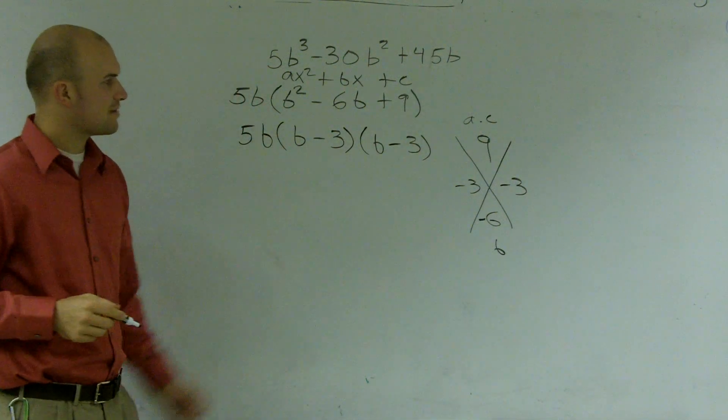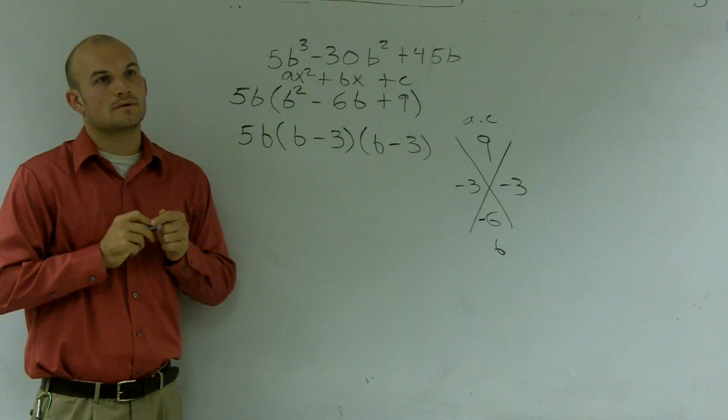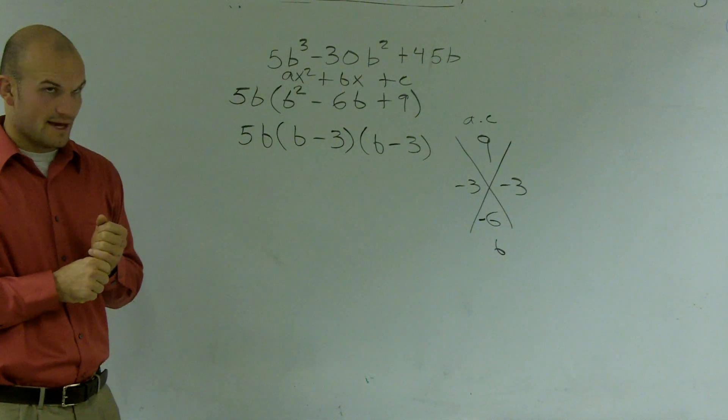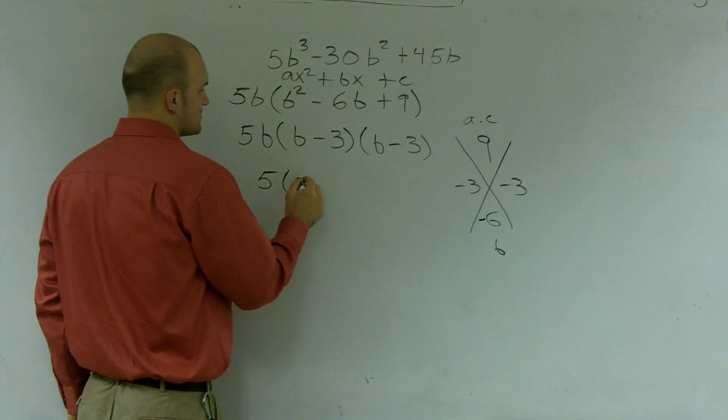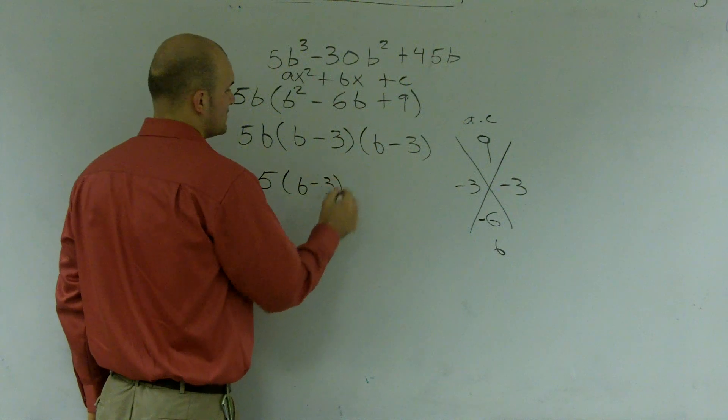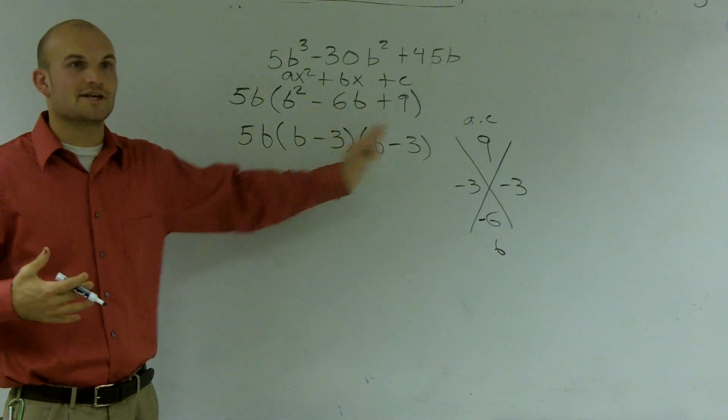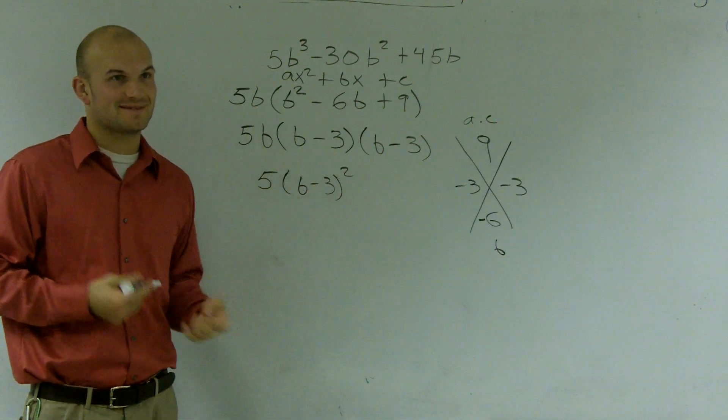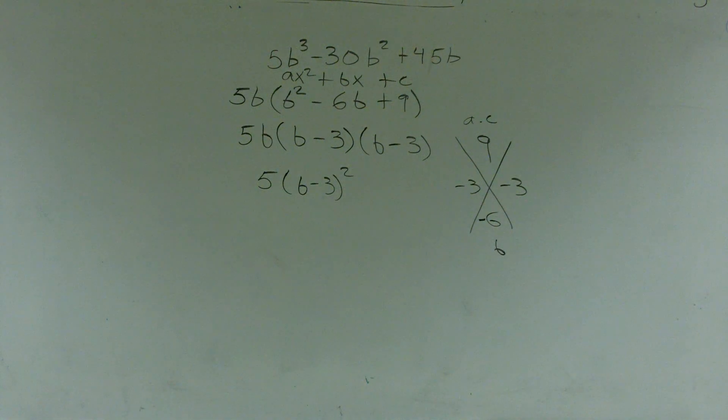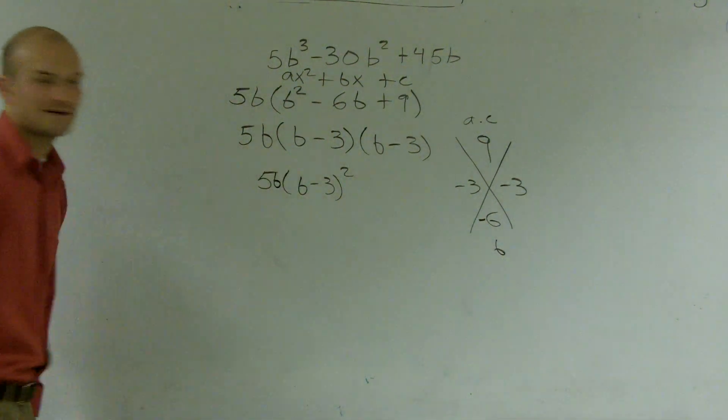So to factor this problem, that would be the factorization. Student question: Can you also do b minus 3 squared? Yes, you could write this out as b minus 3 squared. Since we've been dealing with linear factors - but yeah, it doesn't matter. You'll notice that this also has a multiplicity of 2. Student asks about notation. Oh yeah, thank you.